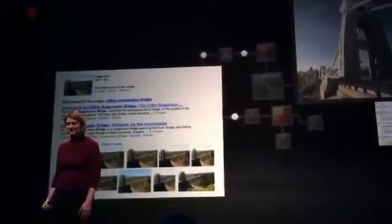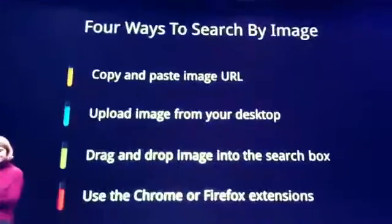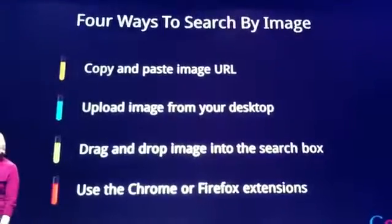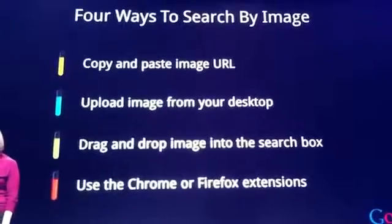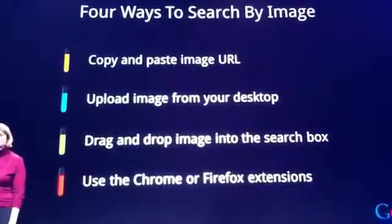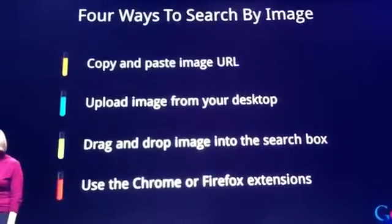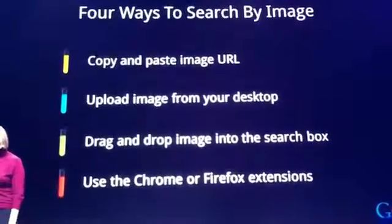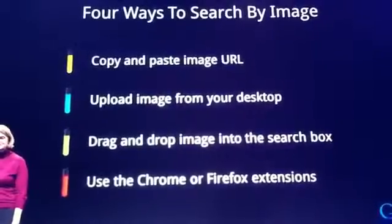Just to wrap up, I want to tell you a little bit about how this feature is getting rolled out. It's rolling out globally on images.google.com over the next few days. When you see a little camera icon in your search box, that means you have access to Search by Image. There are four ways you can access this feature: you can copy and paste an image URL, you can upload images directly from your desktop, you can drag and drop images right into the search box as I did in the demo, and finally we're also announcing Chrome and Firefox extensions, which means Search by Image won't be far away from images as you discover them on the web. Thank you, Peter.